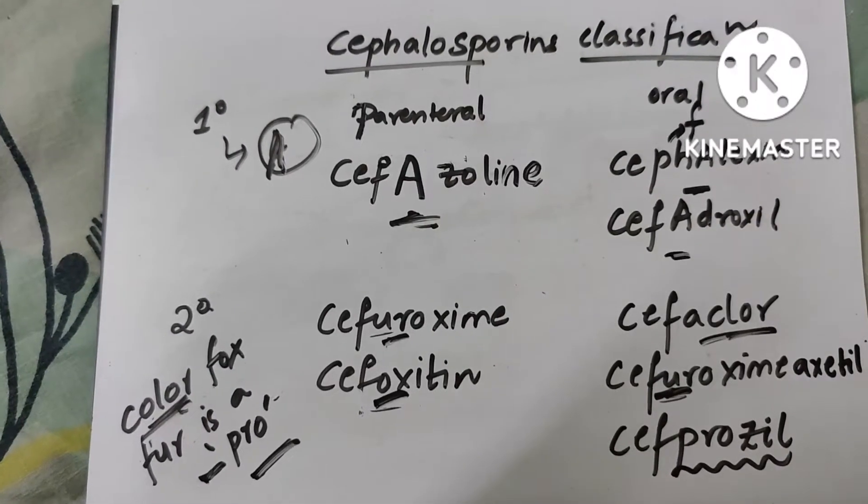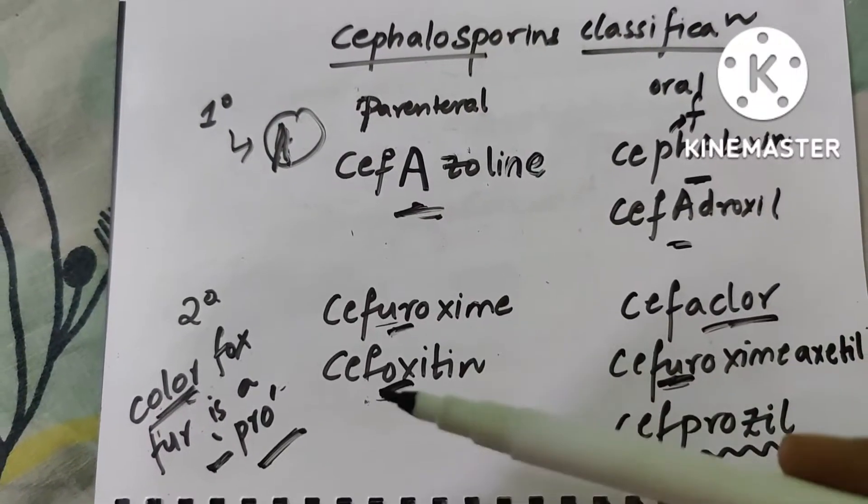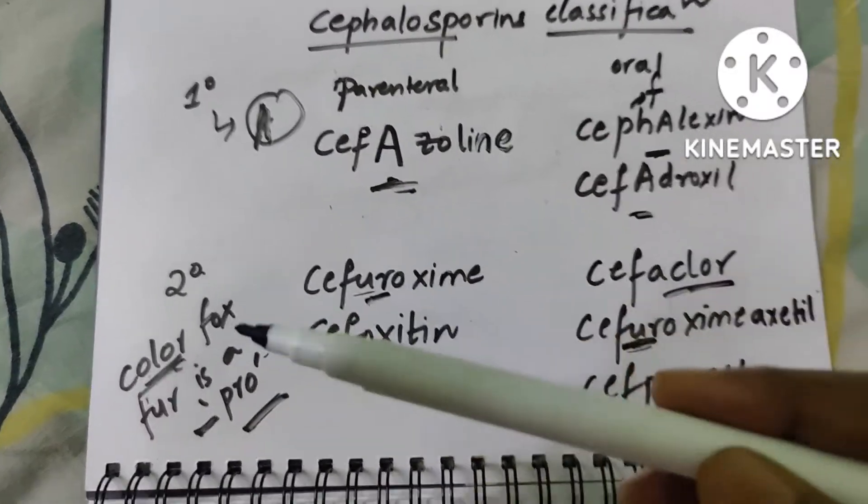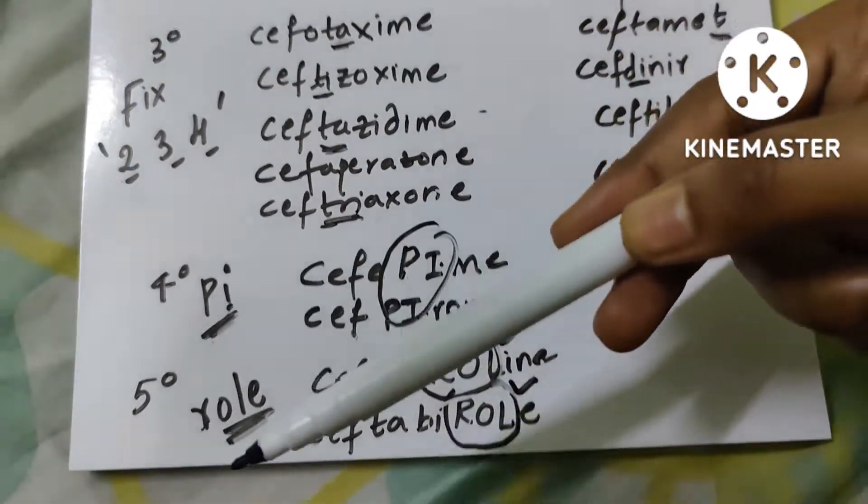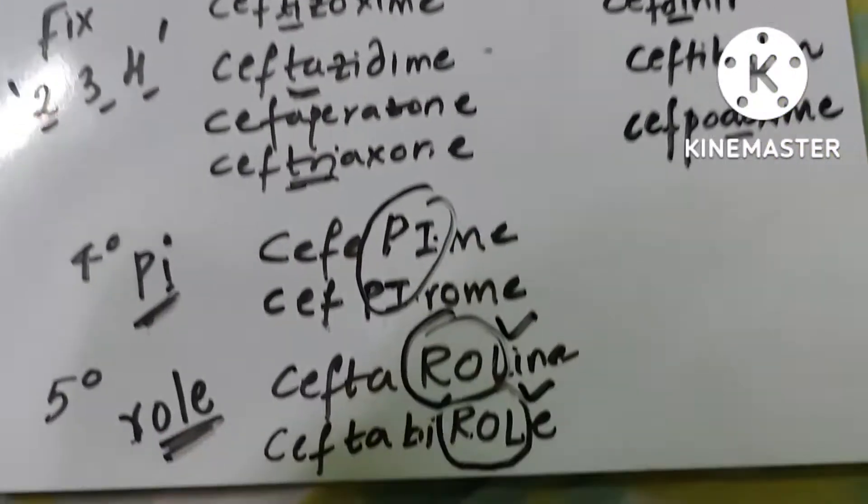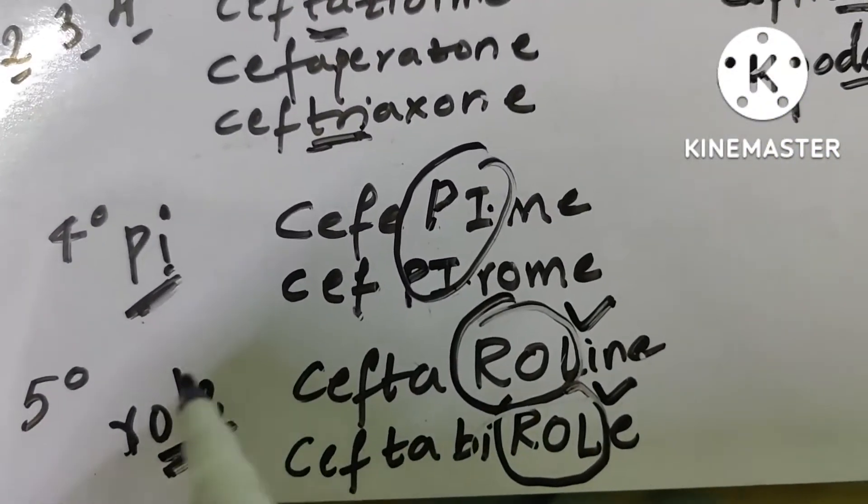Hey guys, let us learn about cephalosporins classification. There are five different generations in cephalosporins: first generation, second, third, fourth, and fifth. Let us come from the fifth generation first.